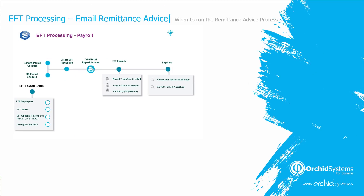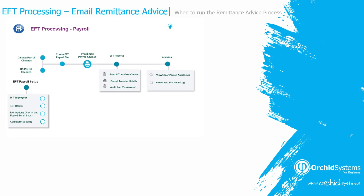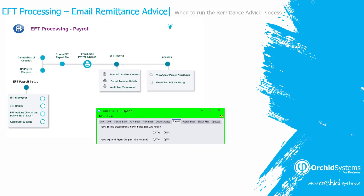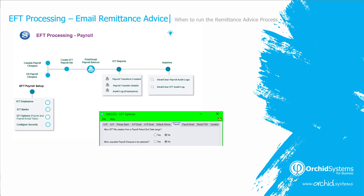For payroll processing, you would first create the Canadian payroll or US payroll checks, then post the checks, create the payroll EFT file, and then print and email the payroll advices. You can also configure EFT options on the payroll tab to allow unposted payroll checks to be selected for the EFT file, so you can create the checks, then create the EFT file, and then email the advices.